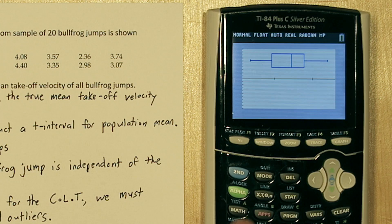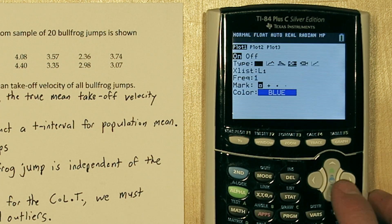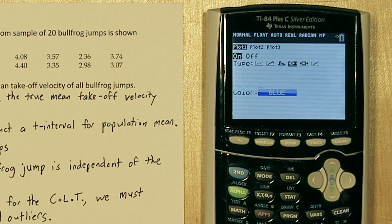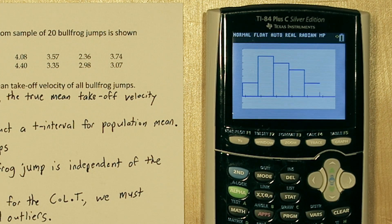Next let's check for skewness. If you press 2nd and y equals again, let's make a histogram. The histogram is this third option here. If we press zoom and 9 again, we get a histogram, and it looks kind of skewed.